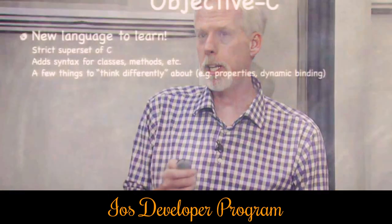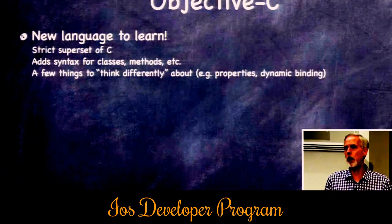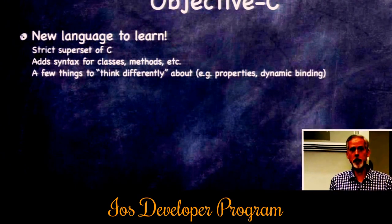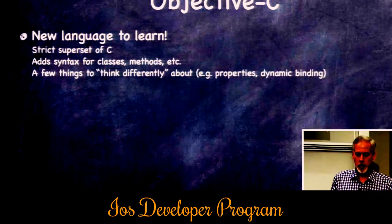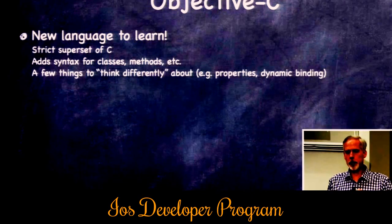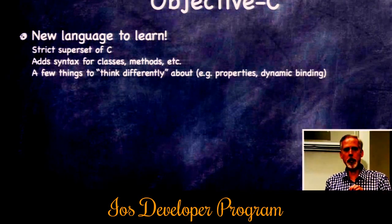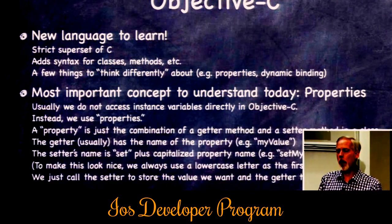On to Objective-C. Objective-C is a strict superset of C — everything you can do in C, you can do in Objective-C. We'll do a lot of C things in this class as well as a lot of object-oriented stuff. But there are a few things to think differently about when you have object-oriented features added onto a language.